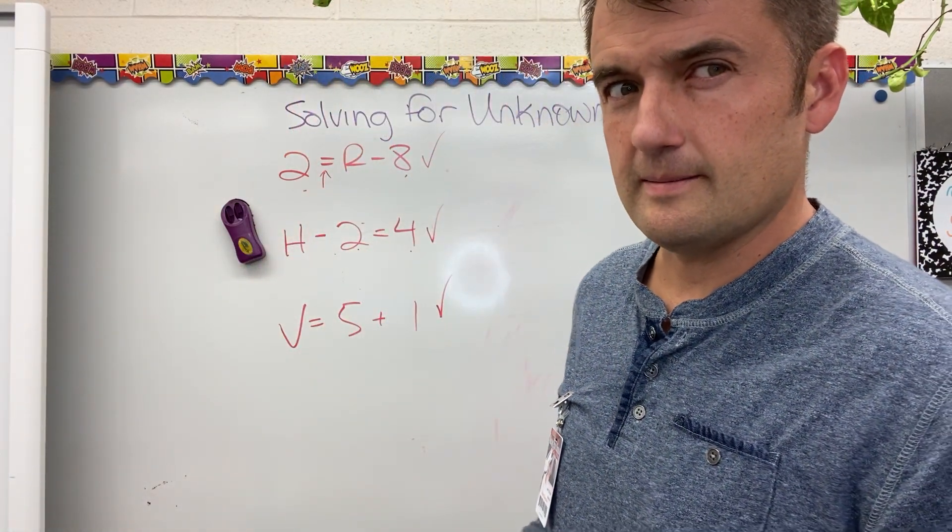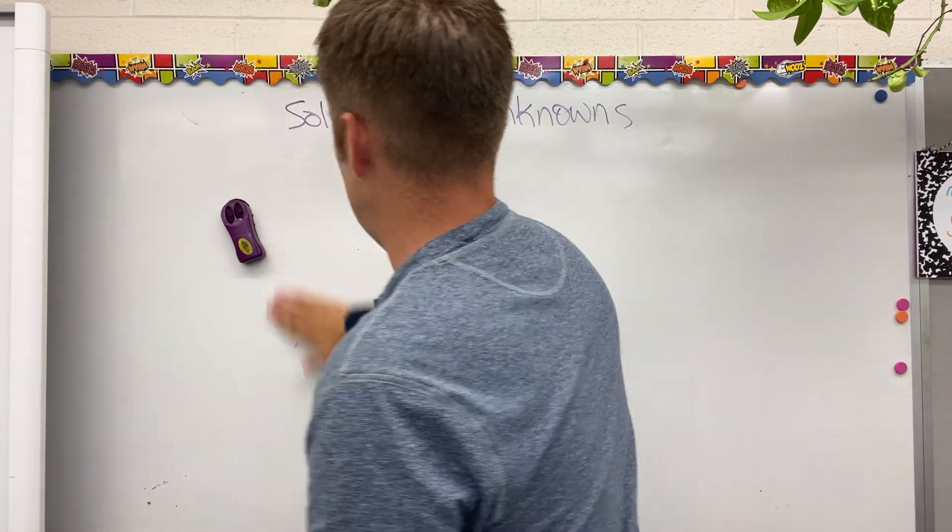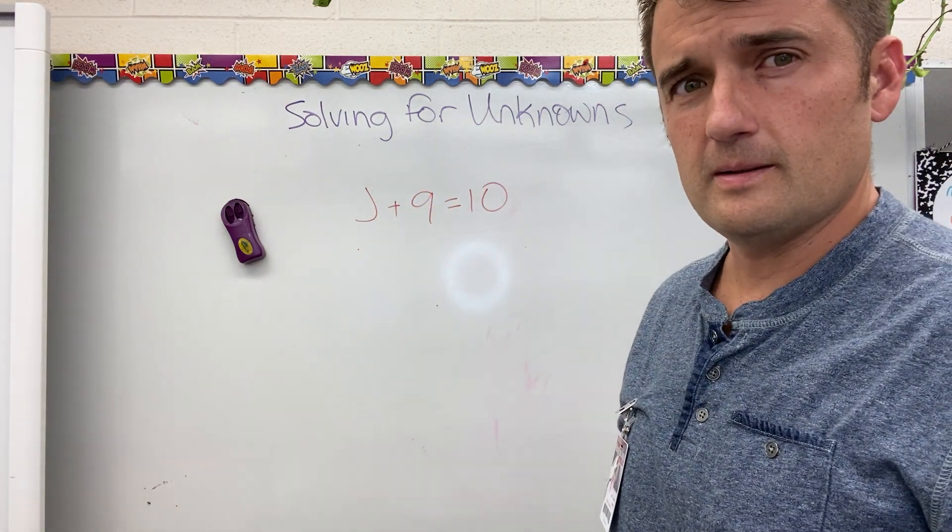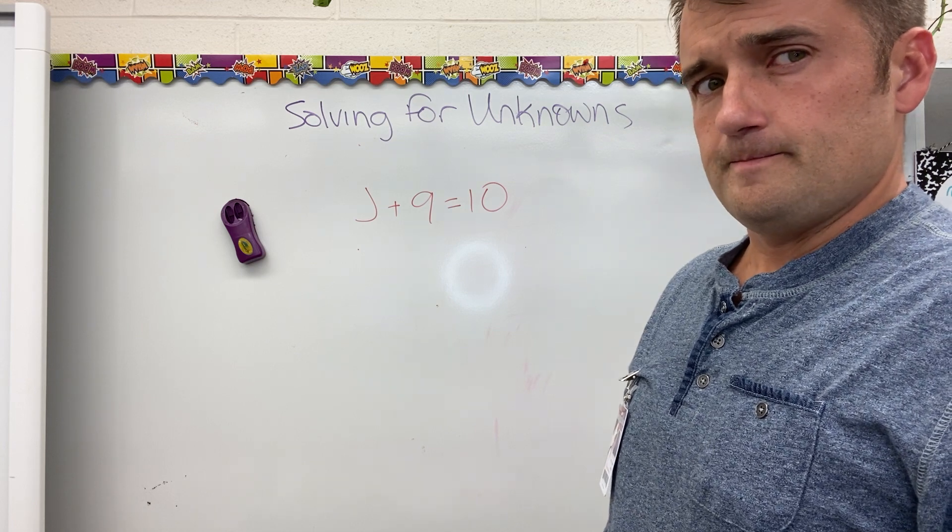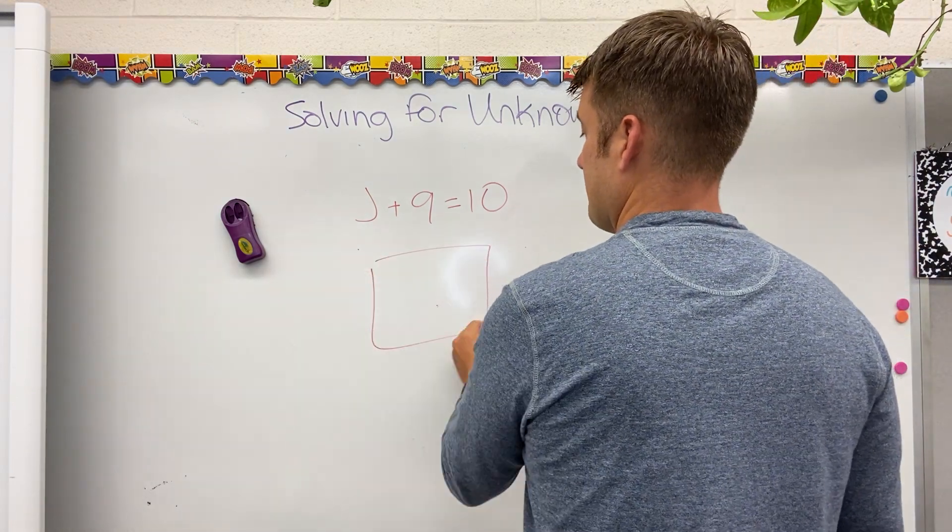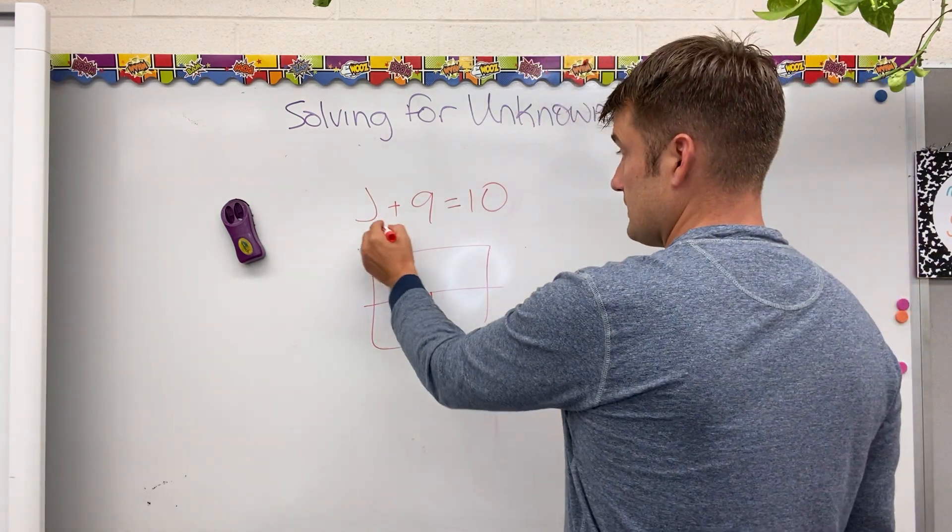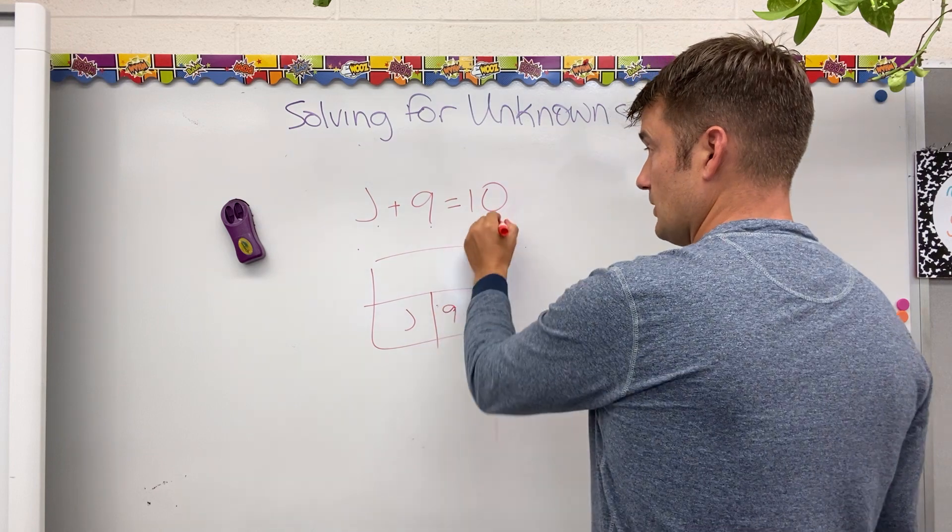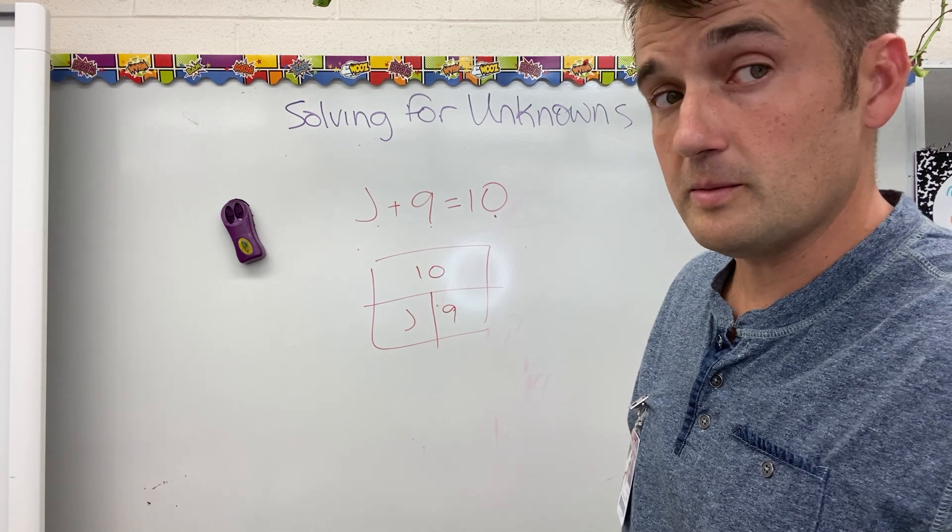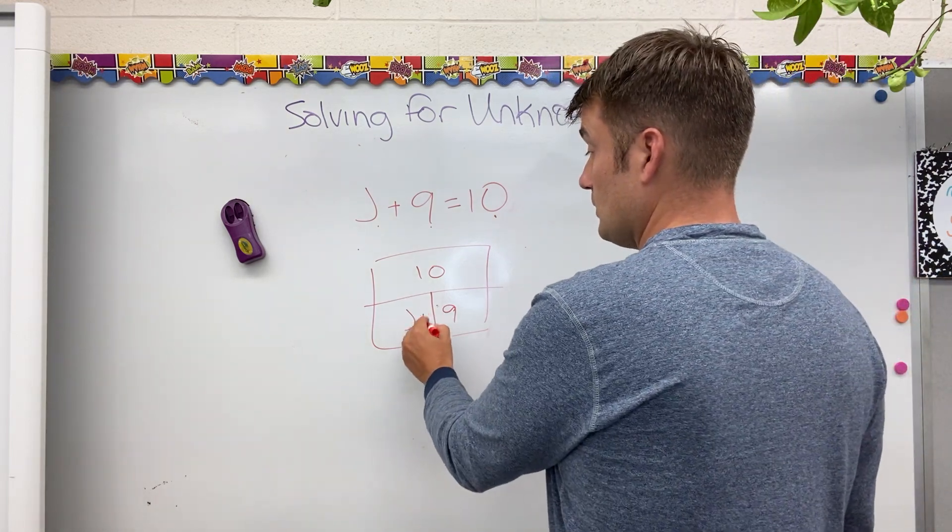J plus 9 equals 10. I've got an addition equation. That means that I'm adding parts to make a total. My parts that I'm adding are J and 9. My total is 10. Something plus 9 equals 10. Something would be 1. 9 plus 1 is 10. That works. 9 plus 1 is 10. J equals 1.